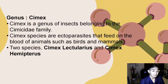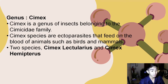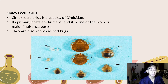Next is Genus Cimex. Cimex is a genus of insects belonging to the Cimicidae family. Cimex species are ectoparasites that feed on the blood of animals such as birds and mammals. There are also two types of species, which are Cimex lectularius and Cimex hemipterus.